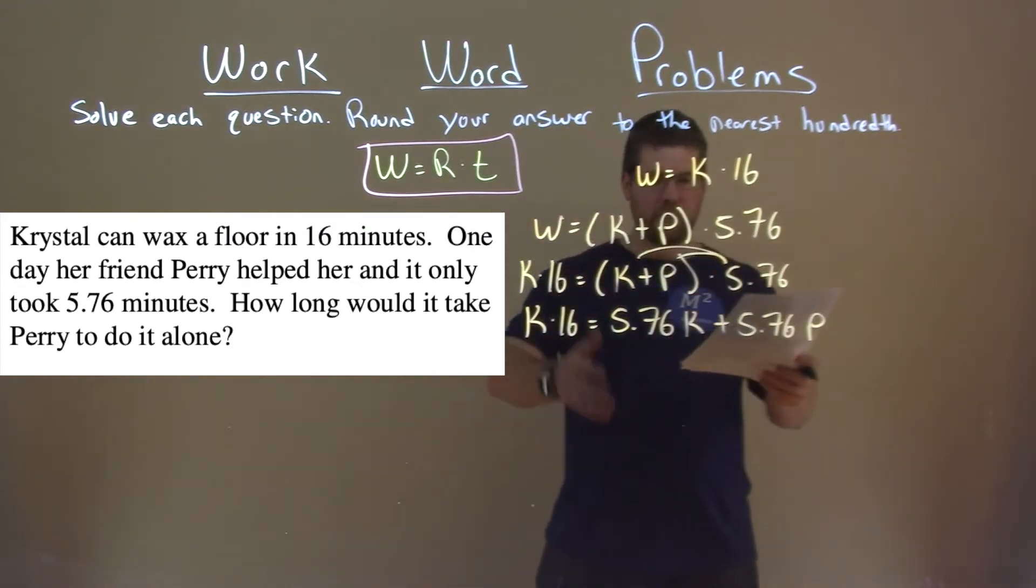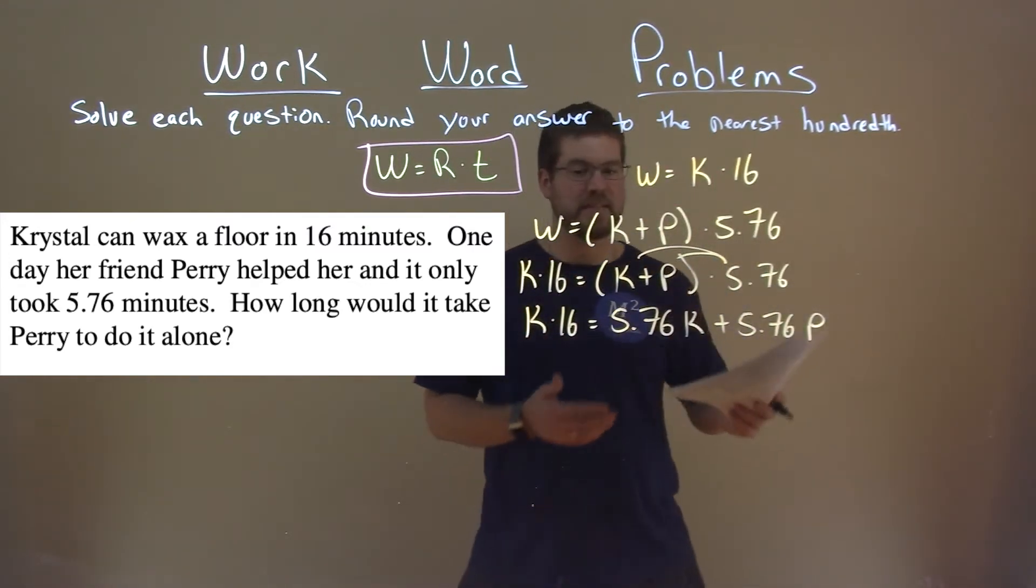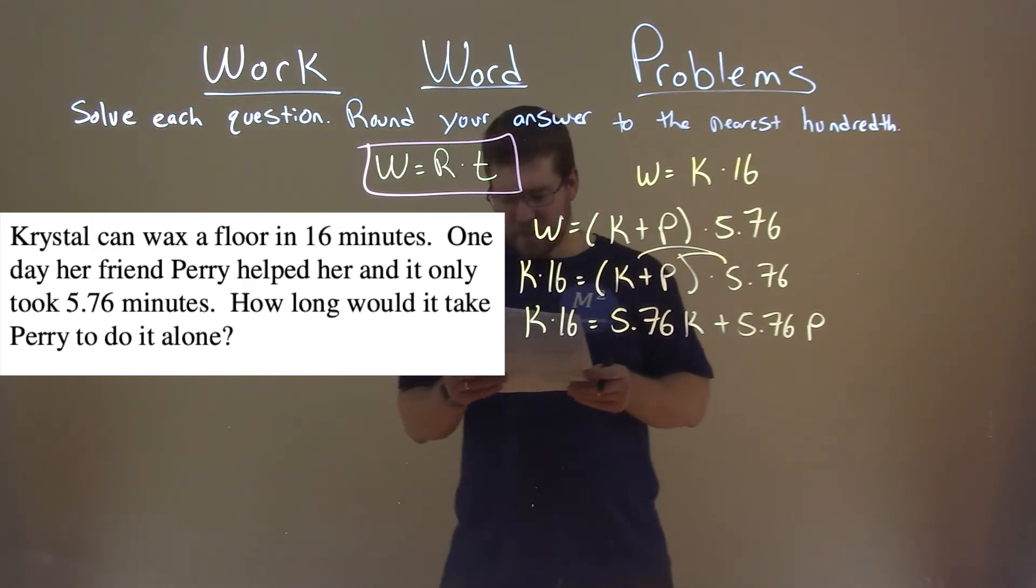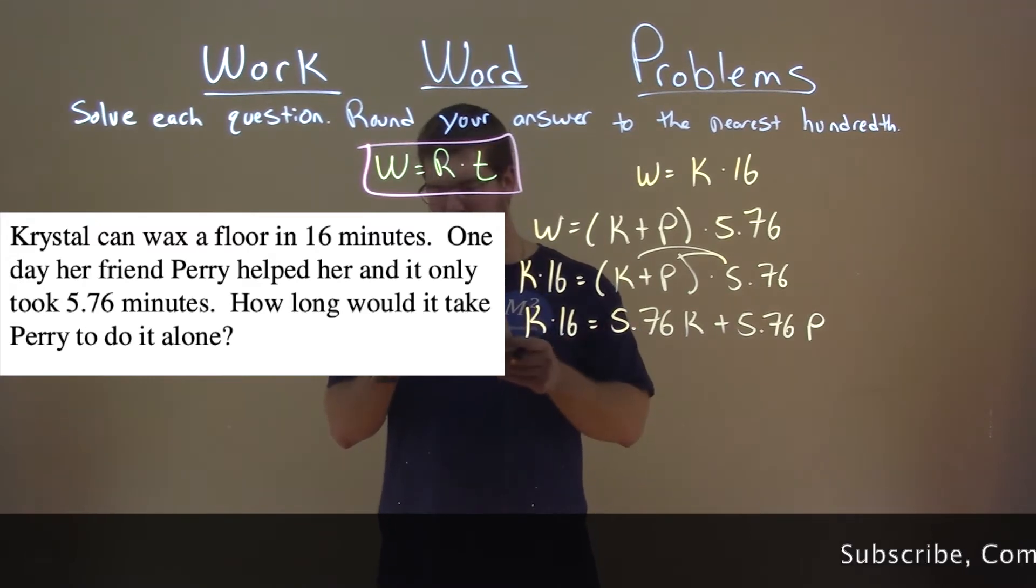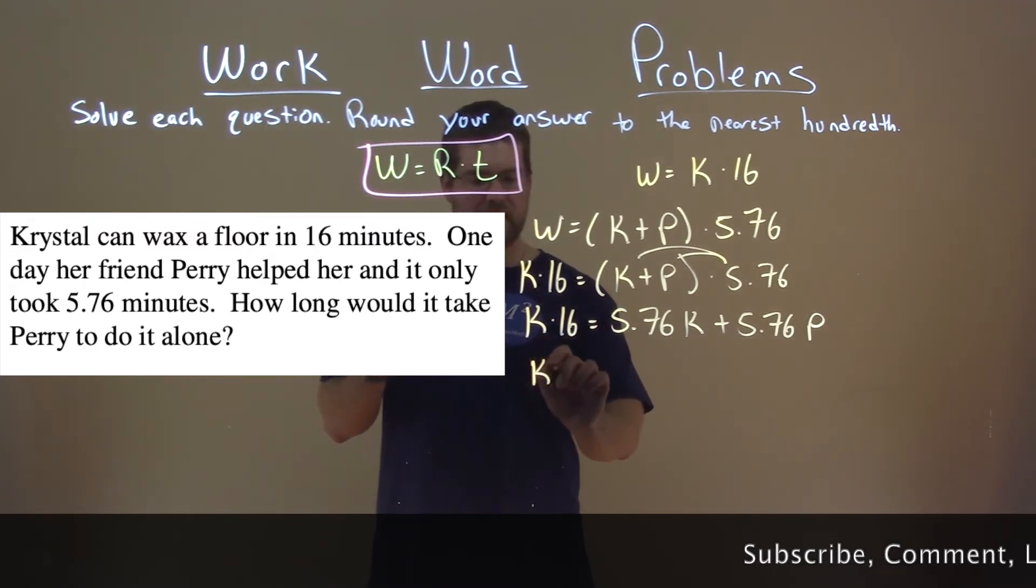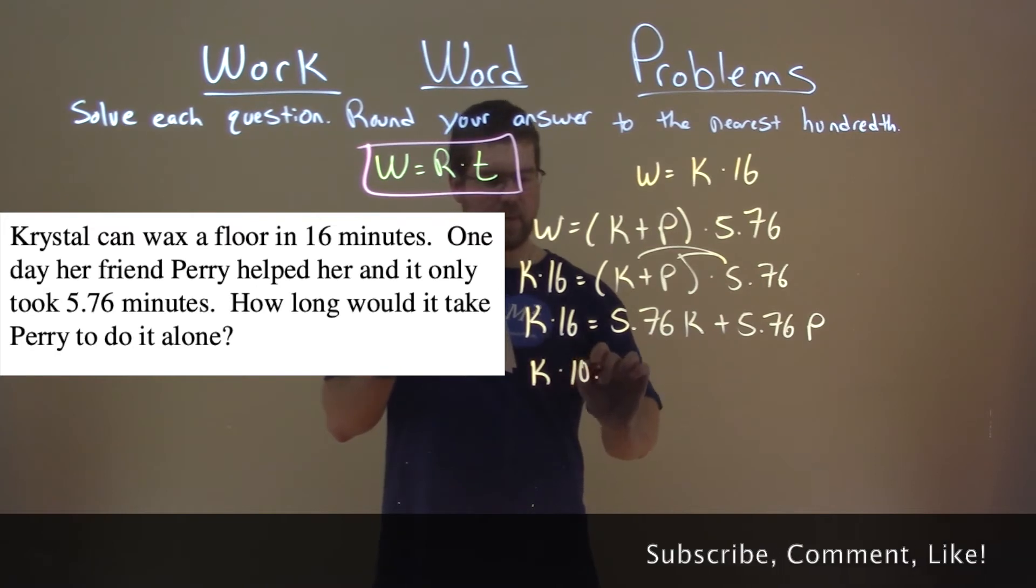And our goal is to see if we can simplify this somewhat. So we'll bring our k's together. We subtract 5.76k to both sides, and 16 minus 5.76 is k times 10.24, and that's equal to 5.76p.